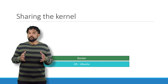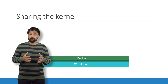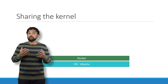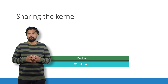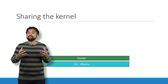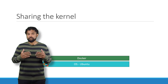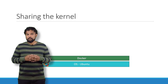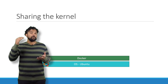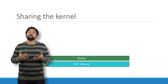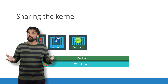We said earlier that Docker containers share the underlying kernel. What does that actually mean, sharing the kernel? Let's say we have a system with an Ubuntu OS with Docker installed on it. Docker can run any flavor of OS on top of it as long as they are all based on the same kernel, in this case Linux.